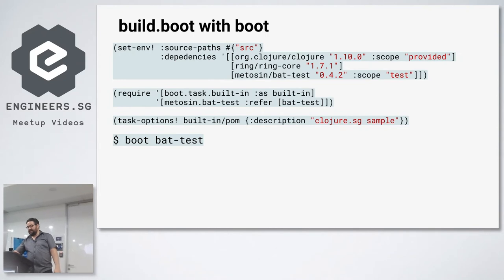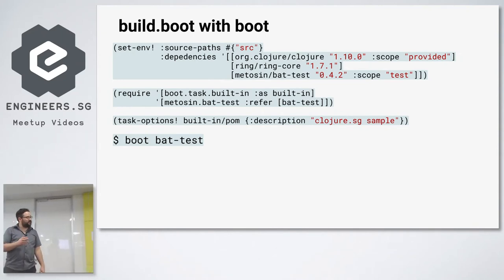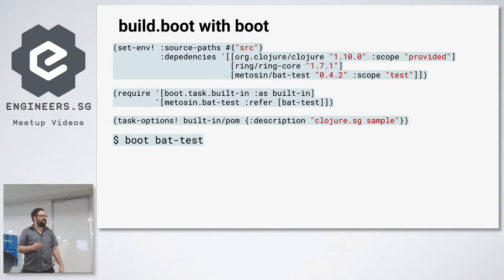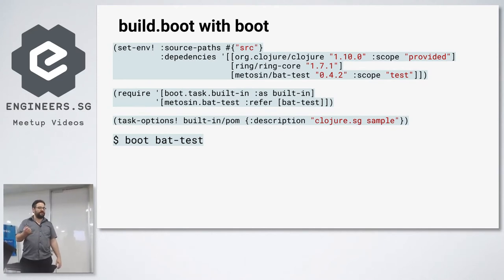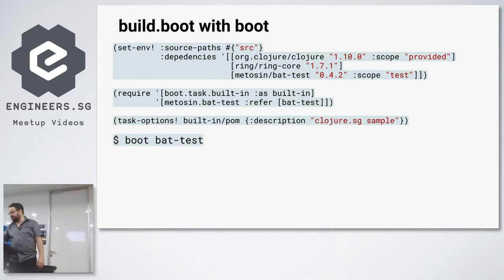Another key point is that Boot is still based on the Maven dependency infrastructure. So unlike Rust or Go, you can't just depend on an undeployed artifact directly in Git — you can't put a Git URL in and have it automatically downloaded and put on your classpath.